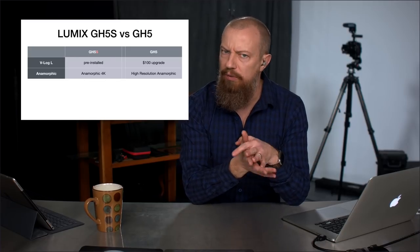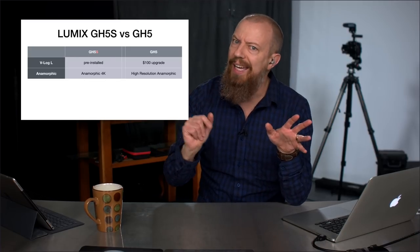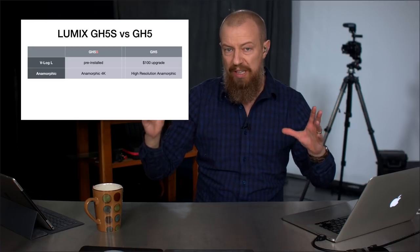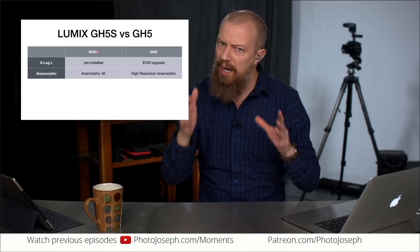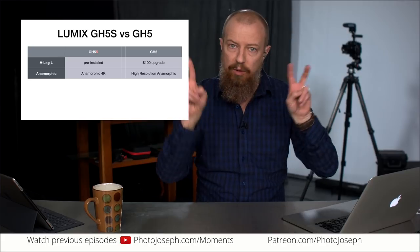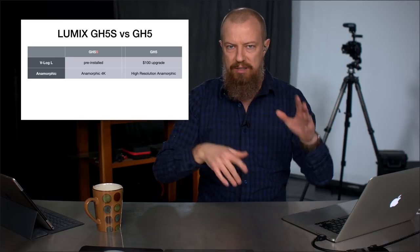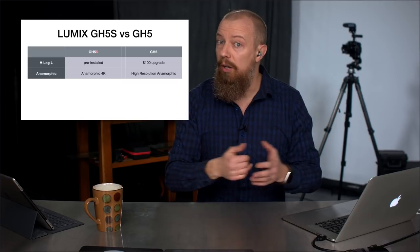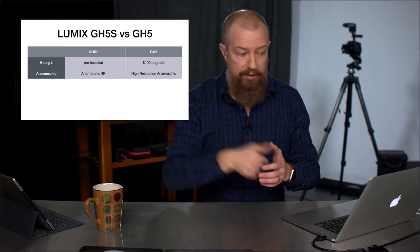Why is high-resolution anamorphic not on the GH5S? It's been called '6K anamorphic' — you're using more of the sensor, getting an even bigger image. The reason is the lower-resolution sensor: it's only 10 megapixels. So if you want that super high-resolution, virtually 6K anamorphic — depending on how you do the math — you don't have that capability on the GH5S.